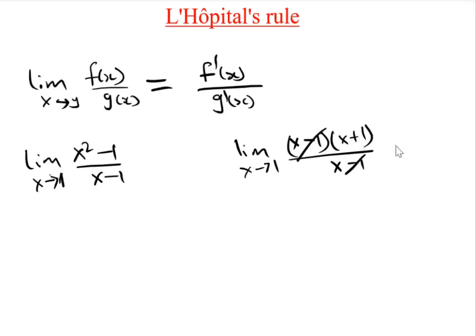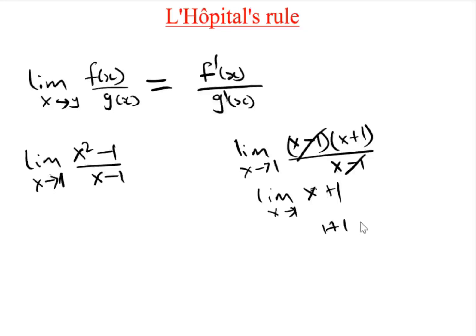We are left with the limit of (x + 1). If we substitute 1 into this, we have 1 + 1, which gives us 2.